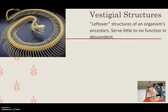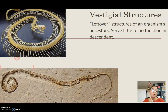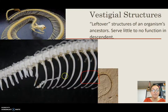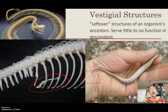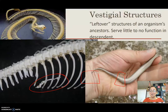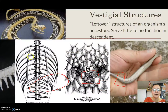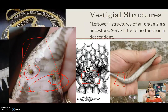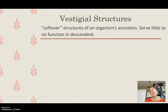We can also see vestigial structures in snakes. Snakes today don't have legs, but their ancestors did. Modern snake skeletons have pelvic bones just like whales, even though no legs currently attach. However, some species of snakes still have little appendages near that pelvic bone — vestigial legs — even though they're not used for walking.